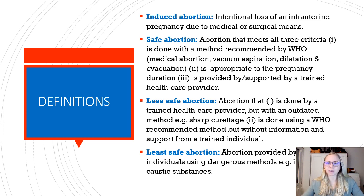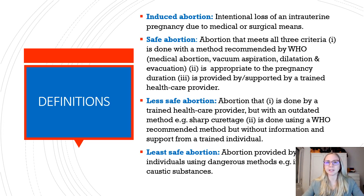The safe abortion definition is abortion that meets all three of the following criteria. First, it's done with a method recommended by WHO — that is medical abortion, vacuum aspiration, dilation, and evacuation. The second is that it is appropriate to the pregnancy duration. And the third is that it is provided by or supported by a trained health care provider.